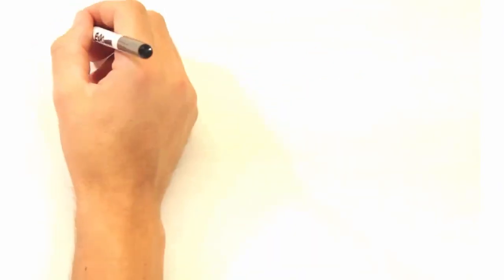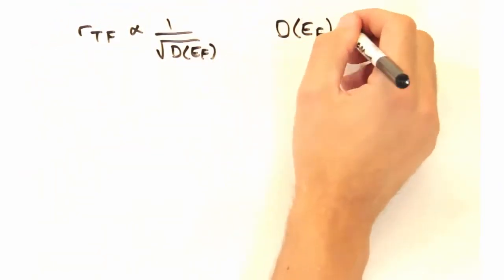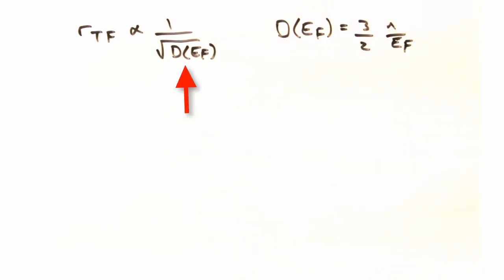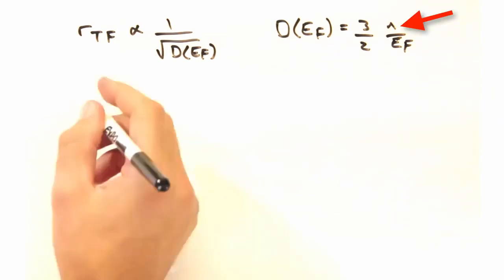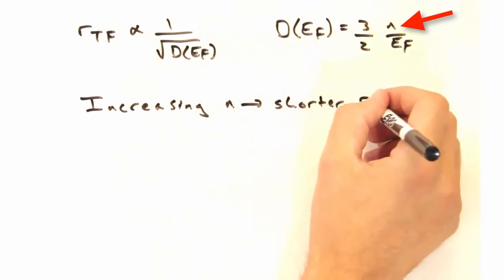So let's bring the screening length back to the density of states and the carrier concentration. Well, we know that Rtf is inversely proportional to the square root of the density of states. And we also have this expression for the density of states. So we see that increase in carrier concentration N leads to a shorter screening length.